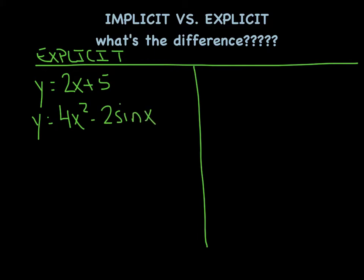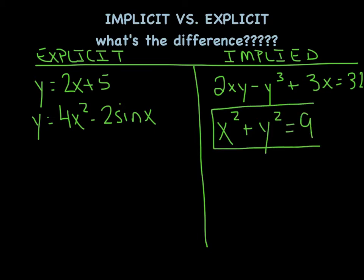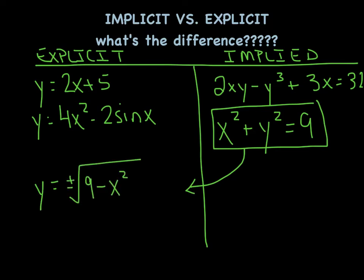However, implicit — you've probably had conversations where you've implied certain things, maybe without clearly stating them. Same thing here goes with math. An implicit equation is one such as 2xy minus y cubed plus 3x equals 32. Here's an example where neither variable is isolated or solved for, and even if you really wanted to, I think it would be darn near impossible to do so. Then there are implicit equations such as a circle, which is an implicit version right now. But if you really wanted to, you could solve for one variable and turn it into an explicit equation — maybe y equals plus or minus the square root of 9 minus x squared. Over here it's implicit, over here it's explicit.